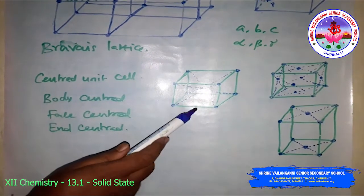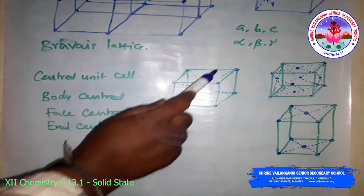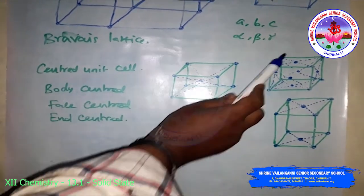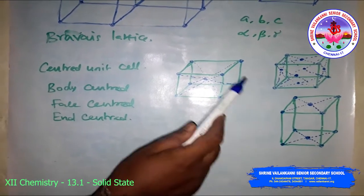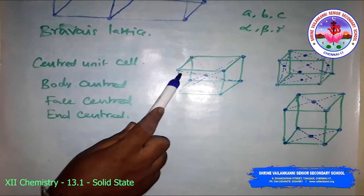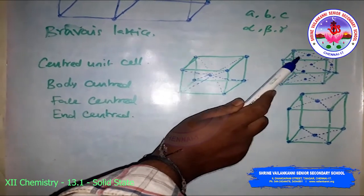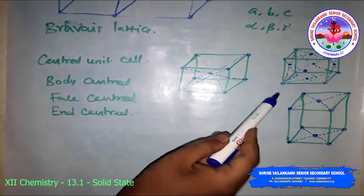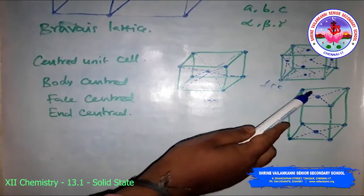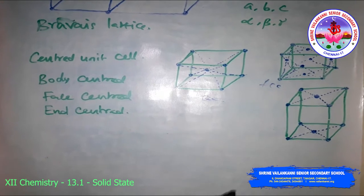Looking at the diagrams: this is the body-centered cubic cell, with a point at the center of the body. This is the face-centered cubic cell — a cube has six faces, with lattice points at the center of each face, giving FCC. And this is the end-centered unit cell, with points at the top and bottom face centers. So these are BCC, FCC, and the end-centered cubic crystals.